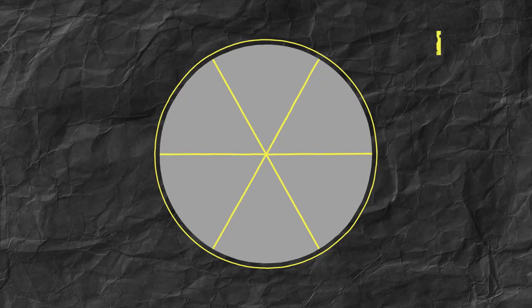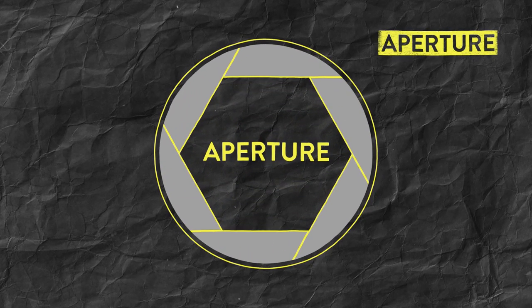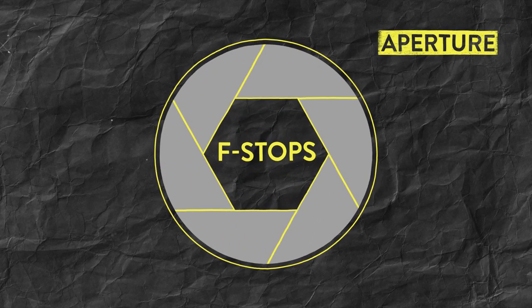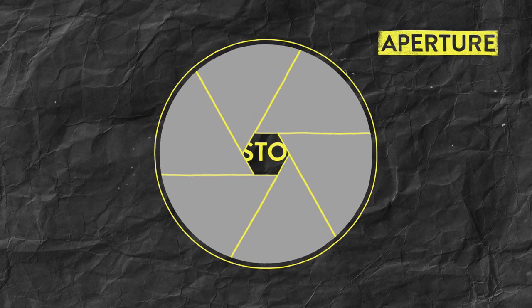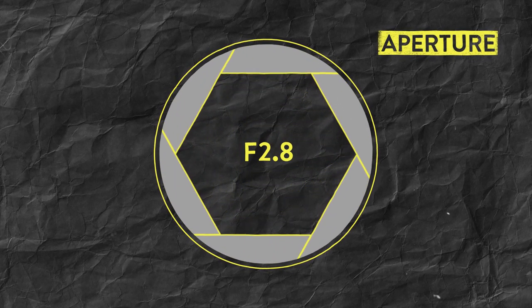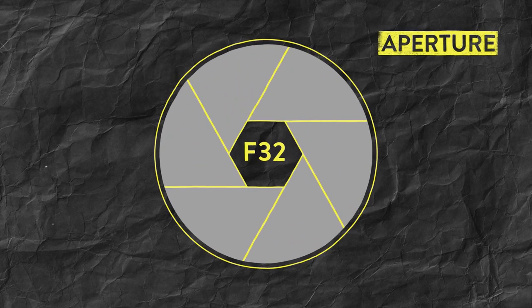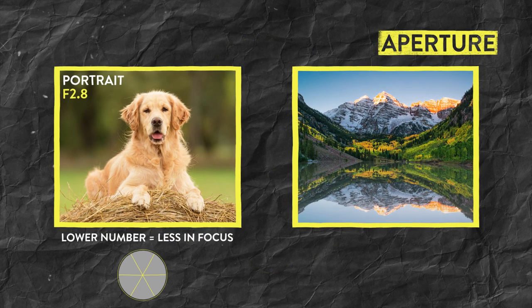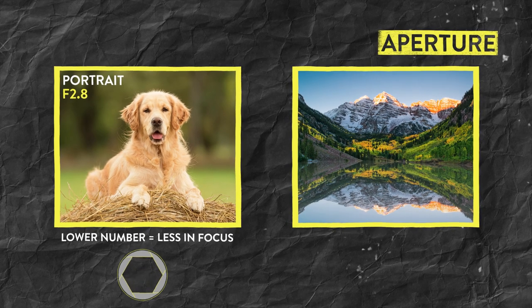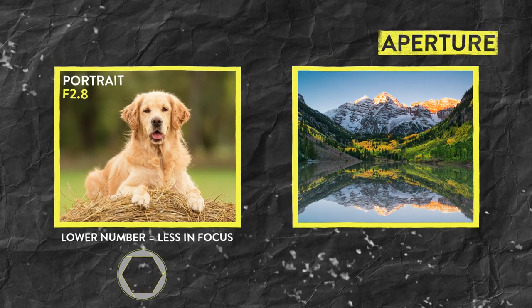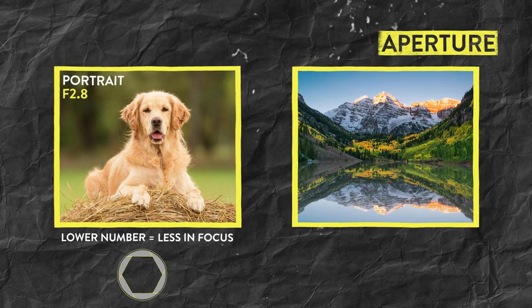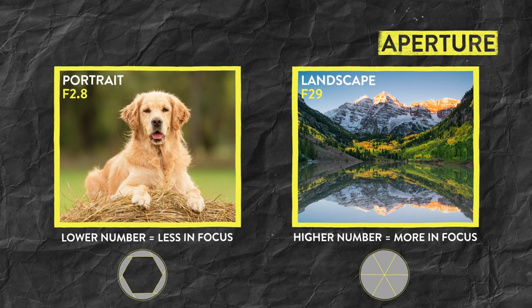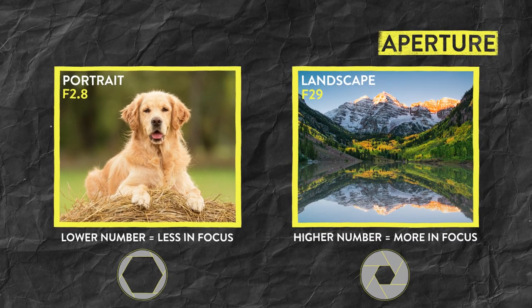The next part of the exposure triangle is your aperture, and the aperture is actually the opening inside the lens. Those settings are called f-stops. This particular lens can go from 2.8 all the way out to f32. The aperture is really important because if you're a portrait photographer, typically you want to shoot more open so the backgrounds are blurred out and less distracting, but if you're a landscape photographer, you're going to shoot more closed so you get all that detail.